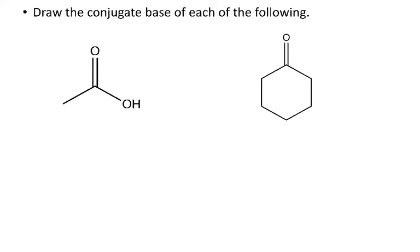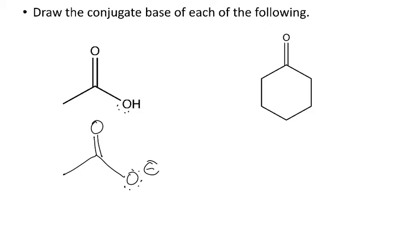The first thing we're going to do is draw the conjugate base of each of the following. If we're looking for the conjugate base, that means these things are acting like acids — proton donors — so I need to take an H+ away from them. This first one is a carboxylic acid, so this is the acidic proton and the one we're going to lose. The conjugate base gains an additional lone pair where the H was lost, and since it lost an H+, that oxygen gets a negative formal charge.